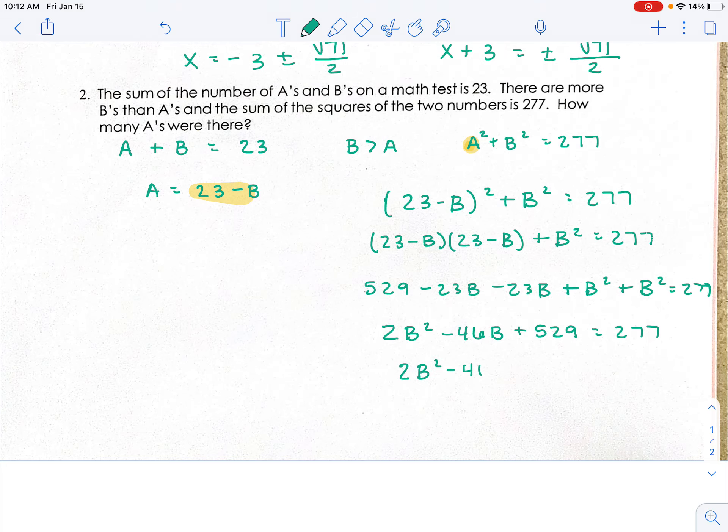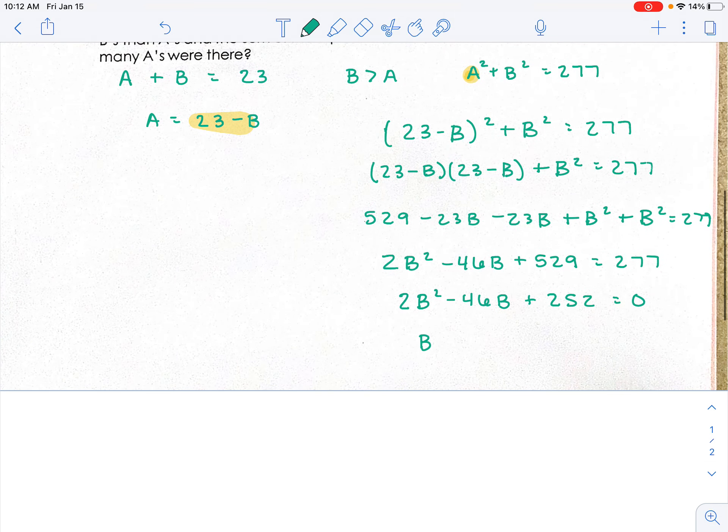I'm going to subtract that 277 over: 2B² - 46B + 252 = 0. I'm looking there and I see that all those numbers have a factor of 2, so I'm just going to factor out 2 real quick just to see if that makes it a little bit easier.